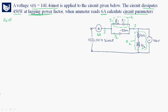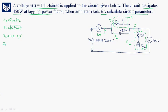Z2 is equal to R2 + jX2, so Z2 = √(R2² + X2²). Impedance is defined as the ratio of voltage to current. Here the voltage is 100 V and the current is 6 amperes, so Z2 = 100/6 = 16.66 ohms.